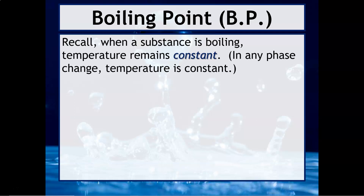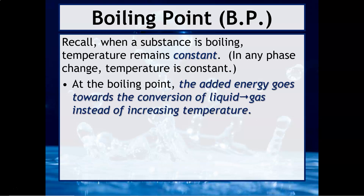Remember, when a substance is boiling, the temperature remains constant because the energy is going toward moving those particles further apart and breaking free of the intermolecular forces. Whenever you have a phase change, your temperature is always going to be constant. At the boiling point, the added energy goes towards the conversion of the liquid to the gas instead of increasing temperature. If you've done heating curves and cooling curves, you can identify a phase change because it appears as a flat region of the curve.